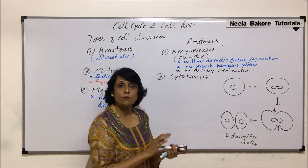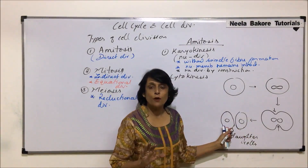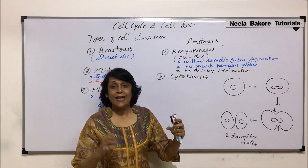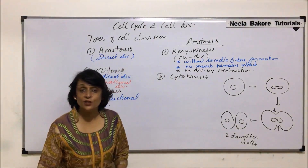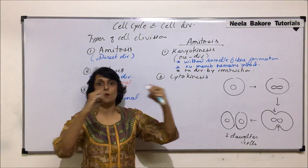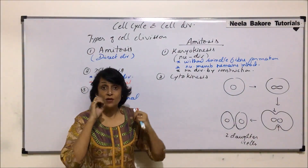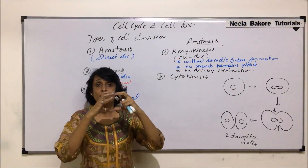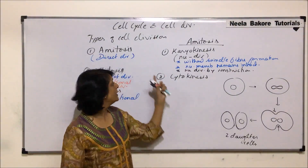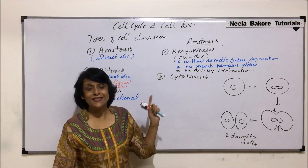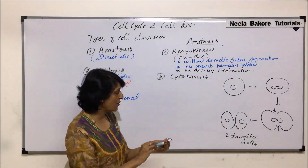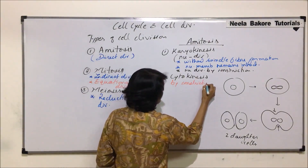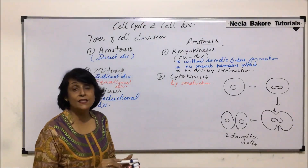The nuclear membrane remains as it is — no spindle fiber formation. You actually see the nucleus splitting, and that is why it is known as direct division. The nucleus undergoes constriction and breaks into two parts. Because changes are visible — we see the constriction and splitting of the nucleus — we call this process direct division. Then the cytoplasm also divides by constriction.